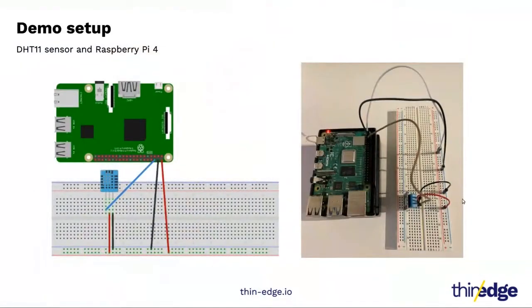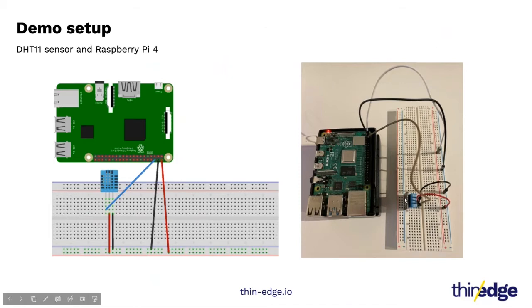This is my first demo. I have a temperature and humidity sensor connected to a Raspberry Pi 4 via GPIO pin. What I want to achieve is to monitor the temperature and humidity from the sensor on an IoT cloud platform — namely, Cumulocity IoT and Azure IoT Hub.